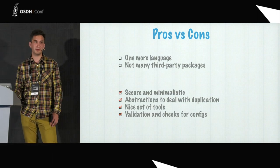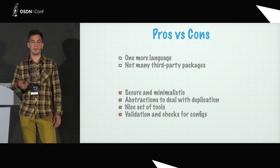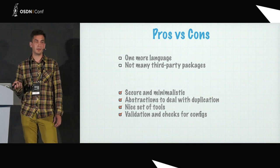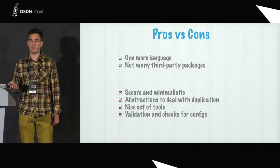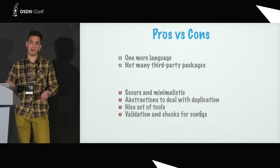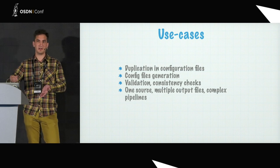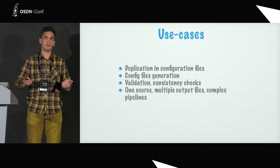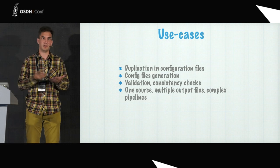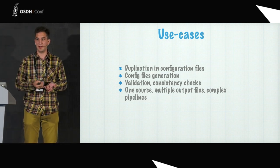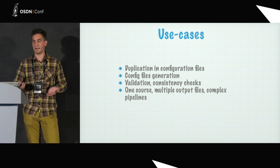What are the pros and cons? First of all, it's one more language to learn, and it may be minimalistic, but it's not exactly familiar because it's not a C-style language — it's a functional language. Depending on your use case, you might not find some third-party packages. But otherwise, I'd argue it's great: it's secure, it's minimalistic, and it provides abstractions to deal with all types of issues, and it comes with a nice set of tools. Use cases: duplication, generation of configuration files, validation for schemas, consistency checks, and cases when you have multiple input files and multiple output files, or just multiple output formats like both CSV and YAML. I'd recommend trying Dhall if you have at least two of these use cases.